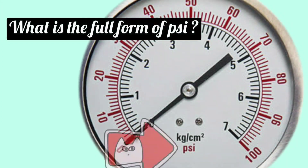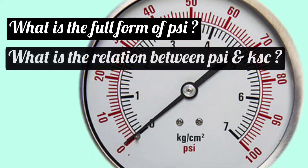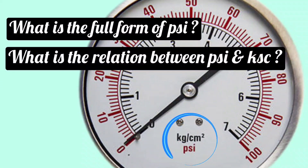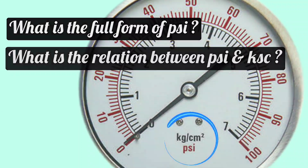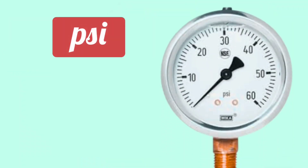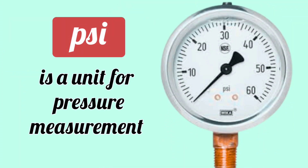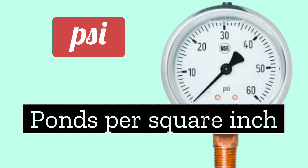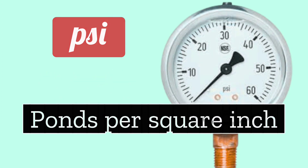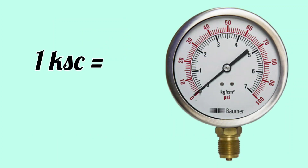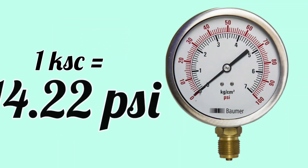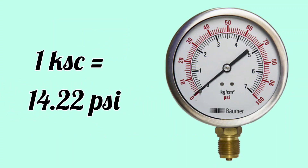What is the full form of PSI, and what is the relation between PSI and kilogram per square centimeters? PSI is a unit of pressure measurement. The full form of PSI is pounds per square inch. 1 kilogram per square centimeter equals 14.22 PSI.